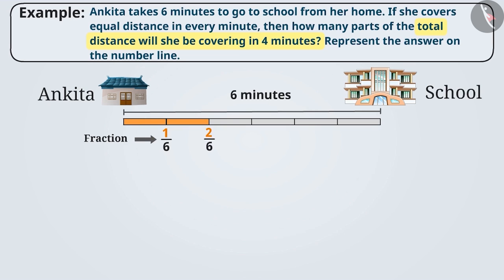In 3 minutes, she will cover 3 parts of the total distance, that means the fraction will be 3 by 6. And similarly, in 4 minutes, she will cover 4 parts of the total distance which can be represented in a fraction as 4 by 6.